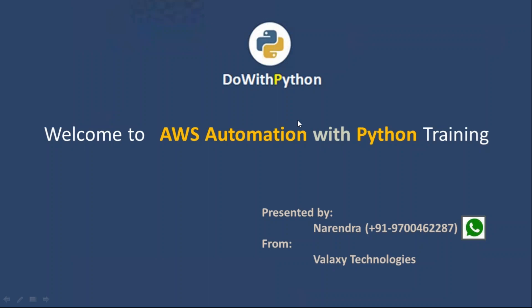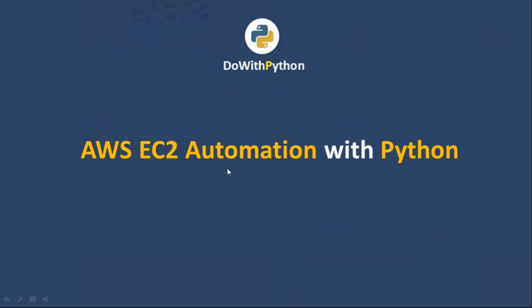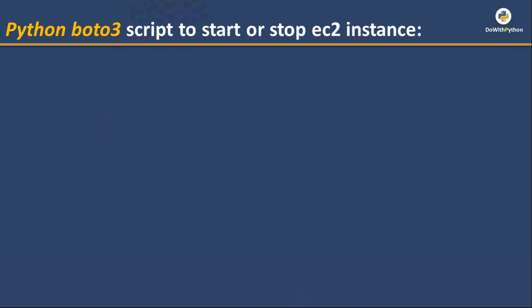Hi friends, welcome to AWS automation with Python training presented by Narendra from Velocity Technologies. We know that we can do automation with Python and Boto3 for any AWS services. Right now we are going to discuss a very simple script about AWS EC2 automation with Python and Boto3. We are going to write a Python Boto3 script to start or stop an EC2 instance.